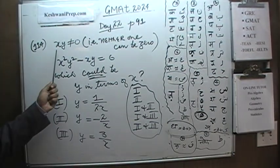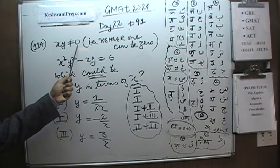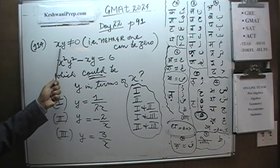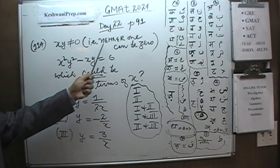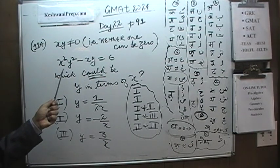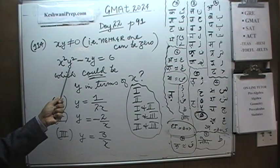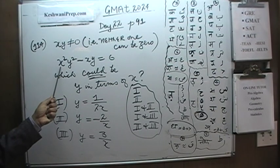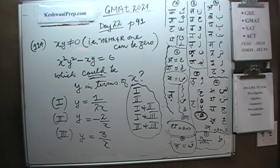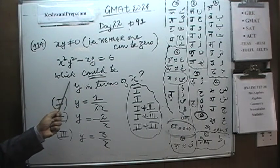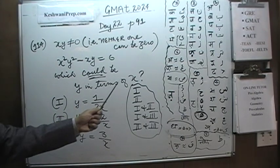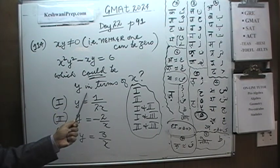We are told that x times y does not equal 0. This bit is not in the book — it's something I am telling you. When they tell you that x times y does not equal 0, that is their way of saying neither one of them can be 0, because if either x or y were 0, the product would have been 0. We are further told that x squared times y squared minus x times y equals 6. The question asks which of the following could be — not must be — y in terms of x.